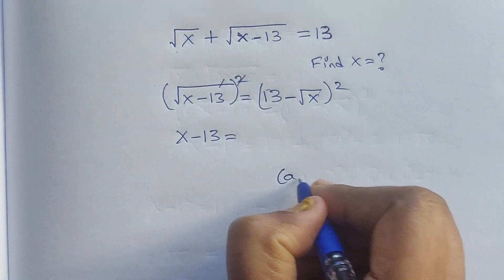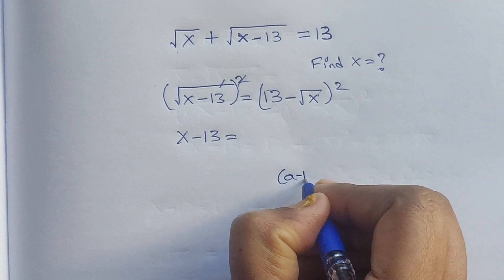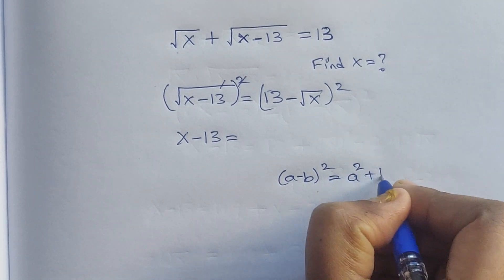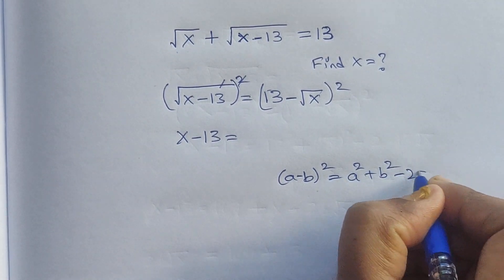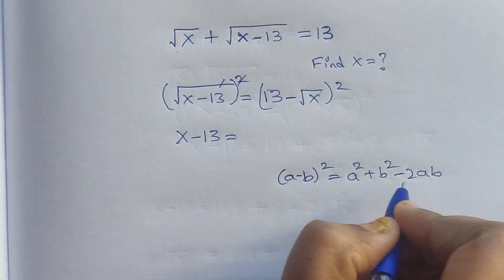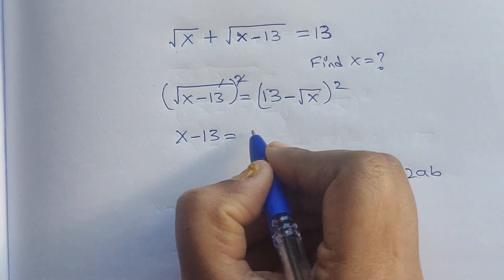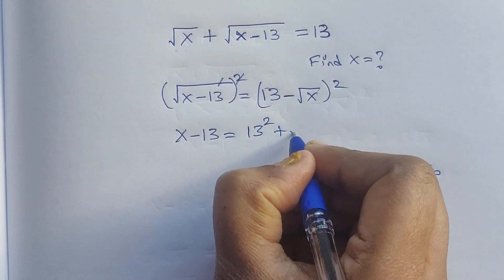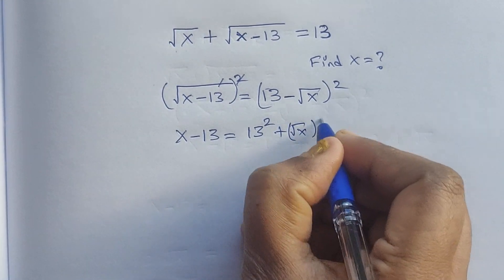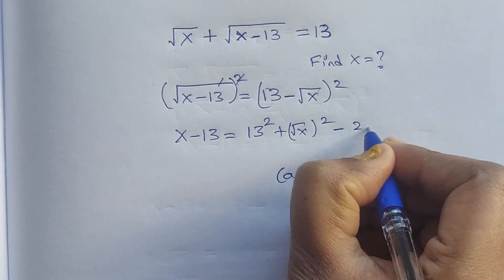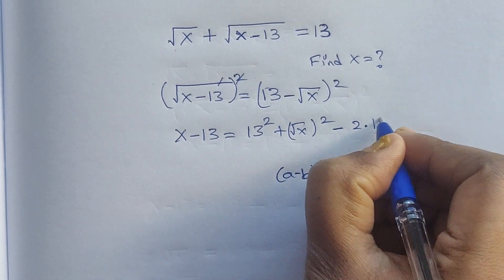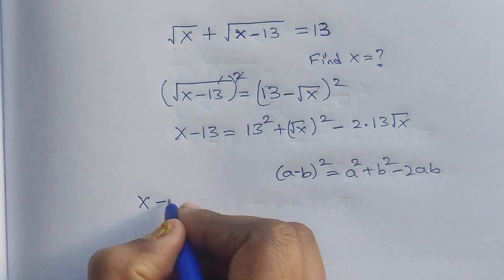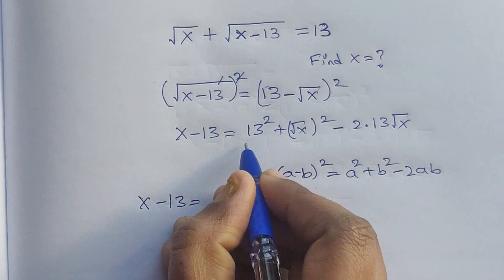The formula (a - b)² = a² + b² - 2ab. I'm going to use this formula here, so (13 - √x)² = 13² + (√x)² - 2·13·√x.